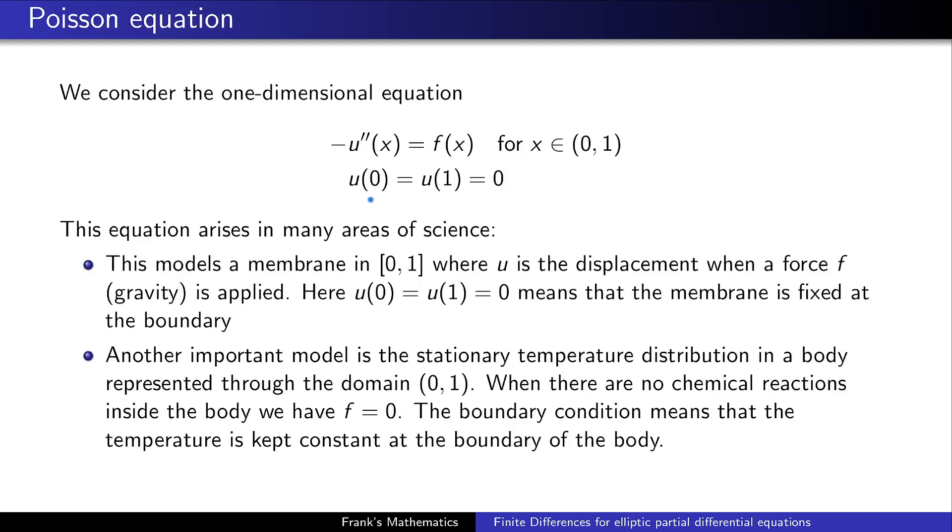For instance, if you have a membrane in the interval zero to one and the membrane is fixed at the boundary and you apply a force to this membrane, then you can model the displacement using the Poisson equation. Another very important model is the stationary temperature distribution in a body. Here the function f models chemical reactions which produce heat inside the body, and the heat is spreading throughout the body. How the final temperature distribution looks like inside this body is modeled by the Poisson equation.